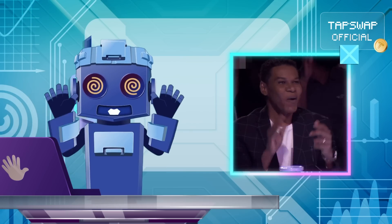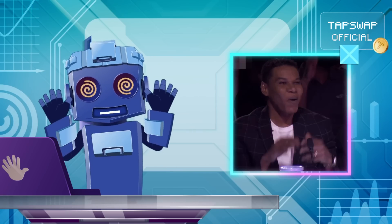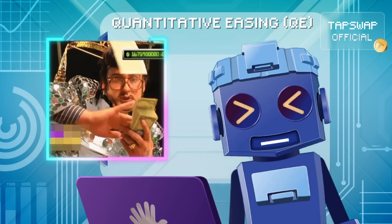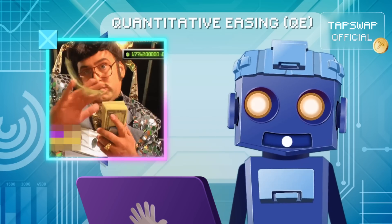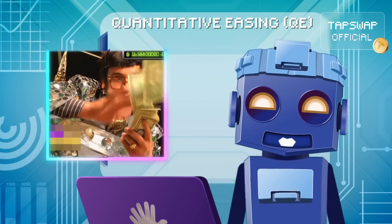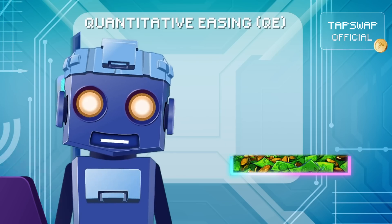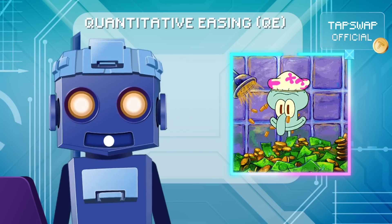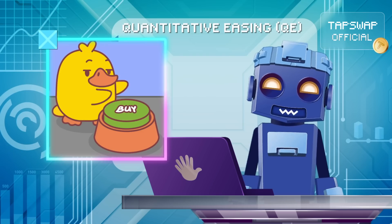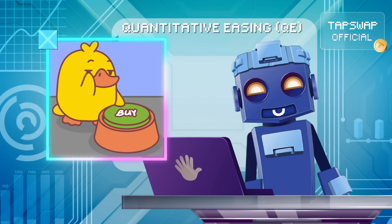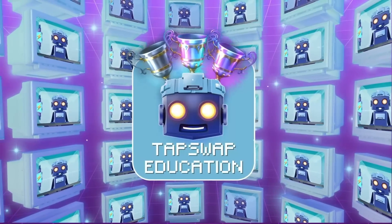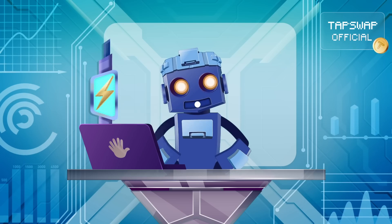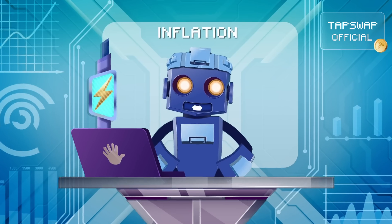Central banks enjoy executing this algorithm called quantitative easing — that's when they upload extra capital to the economy. And what do investors do when there's more money in motion? They funnel it into assets like crypto.